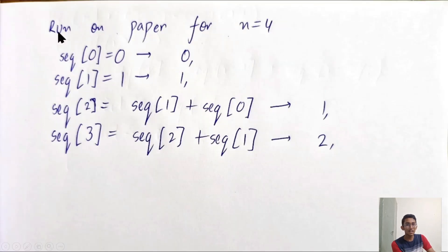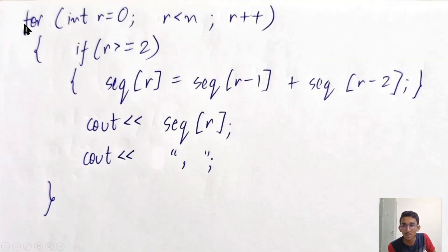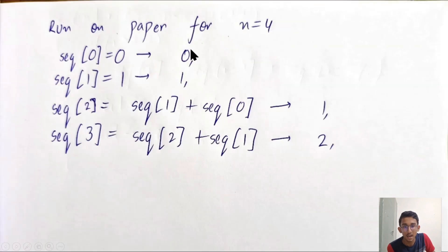Now let's run this code for n equal to 4 on paper. So first, sequence of 0 equal to 0 and sequence of 1 equal to 1 will be defined. Then it will go to the for loop, initialize with integer r equal to 0, and output 0. Then it will output 1 for r equal to 1. Then for r equal to 2, it will create the new term sequence of 2 equal to sequence of 1 plus sequence of 0, which is 0 plus 1, which is 1.